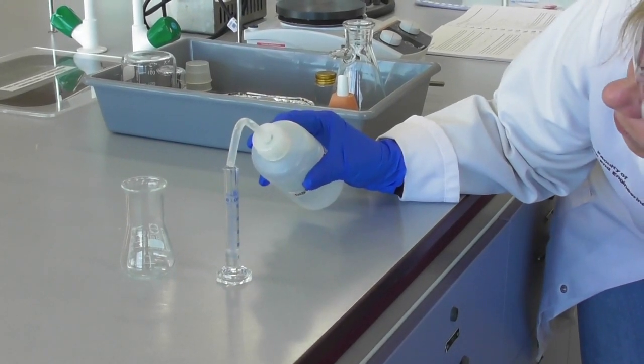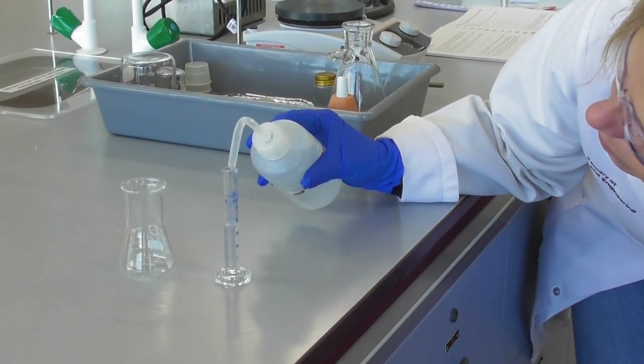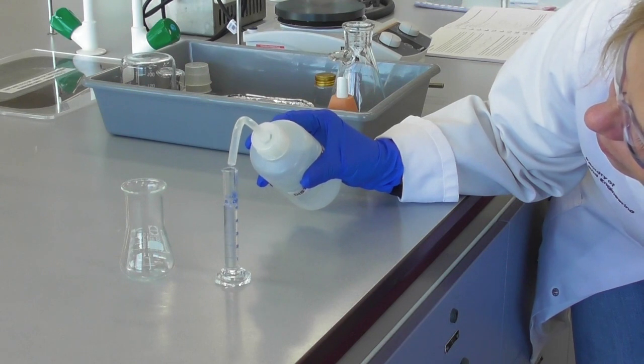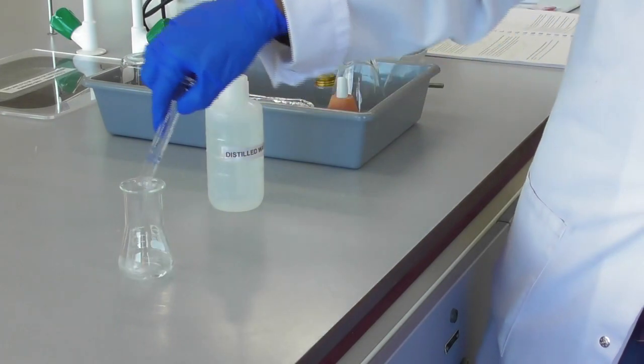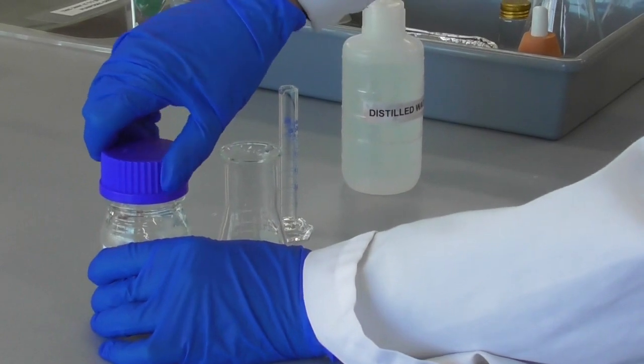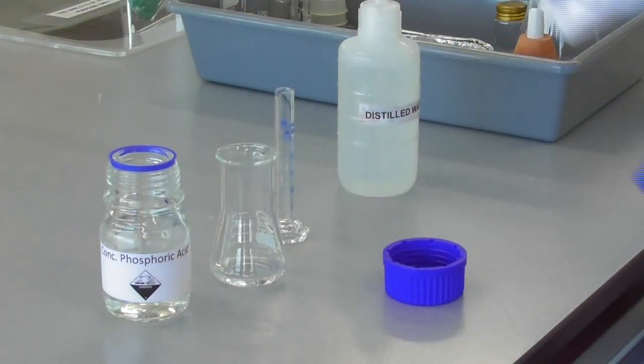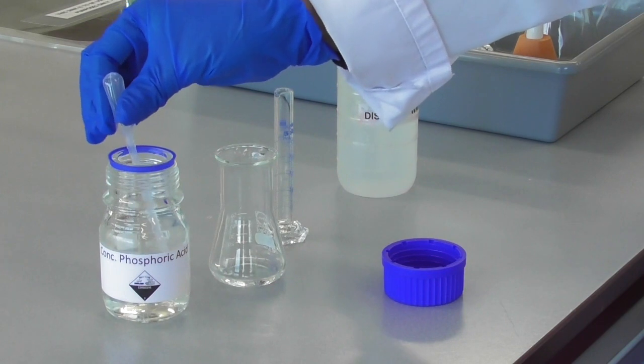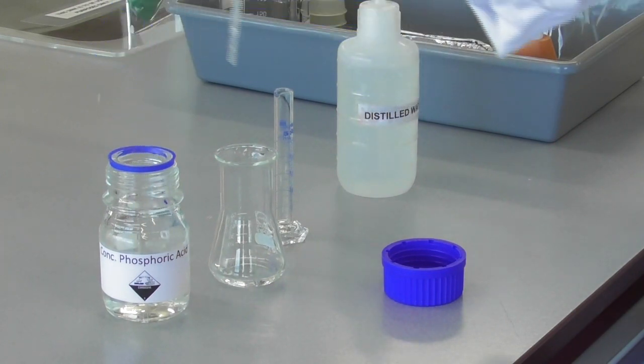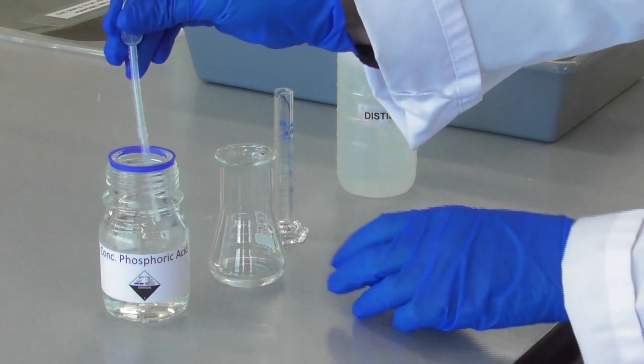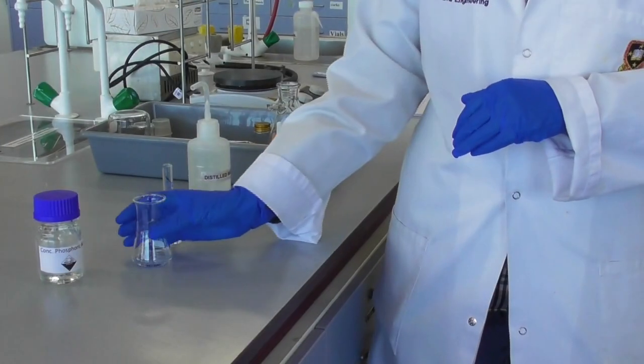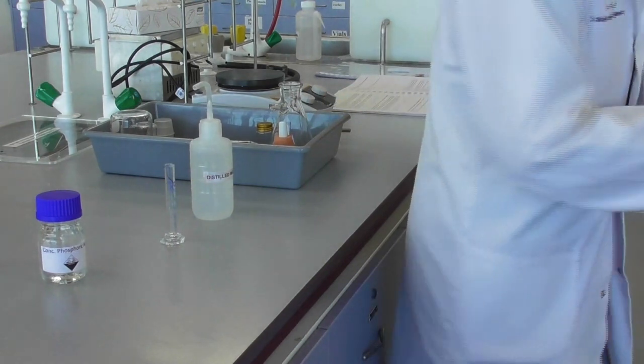First I measure out 5 ml of distilled water and pour this into a 50 ml white neck flask. To this flask I add 8 drops of concentrated phosphoric acid and then I take this flask with the solution to the fume hood.